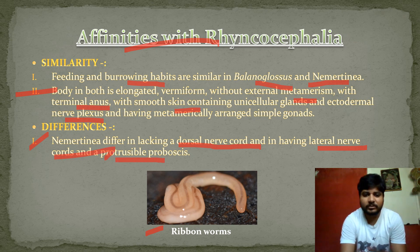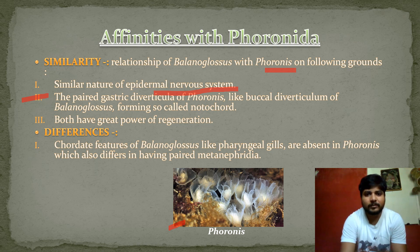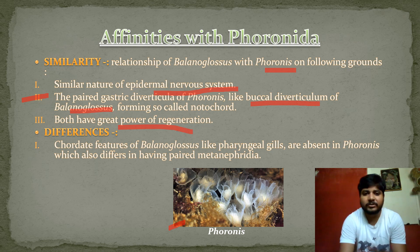The next affinity is with Phoronida. There are similarities between Balanoglossus and Phoronis. The first is the similar nature of the epidermal nervous system. Second, the paired gastric diverticula of Phoronis resemble the buccal diverticulum of Balanoglossus. The difference is that the chordate feature of pharyngeal gill slits, present in Balanoglossus, is absent in Phoronis. There is also a difference in paired metanephridia.